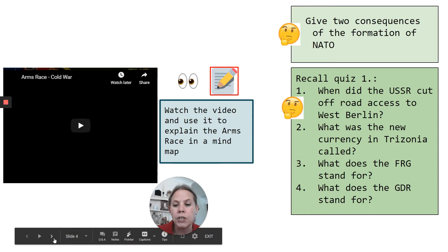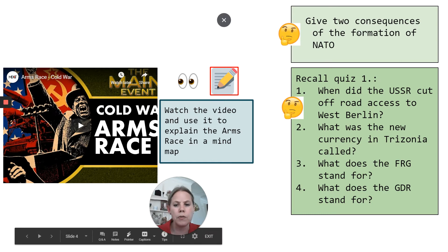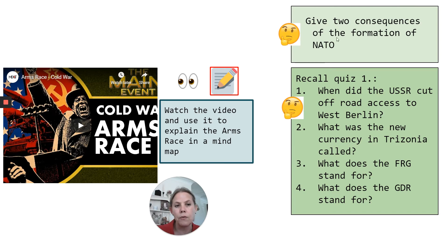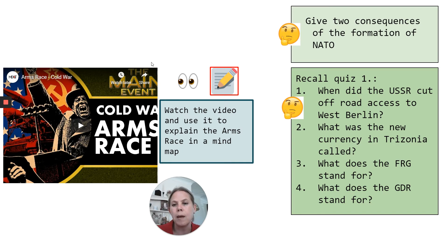Then we've got some random questions and a video for you to watch and make notes on. The first question is two consequences of the formation of NATO. You don't need to do this by trying to remember — you can if you like — but otherwise have a look over your notes for the formation of NATO and think about what happened because NATO was formed. There's a quick recall quiz and I'll put the answers into next week's PowerPoint. There's also a video to watch on the arms race, which gives an explainer. I suggest you do this as a mind map, or as bullet points if you prefer. For those doing a mind map, try to do it like a clock — mind map in the centre, working round from the top, putting each event and part of the arms race around the outside.